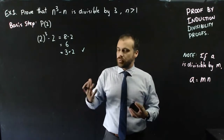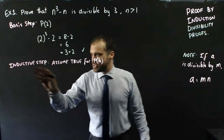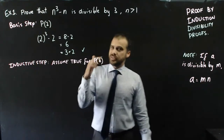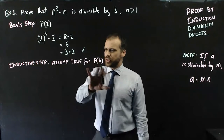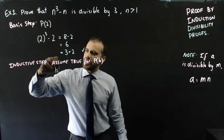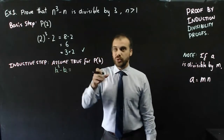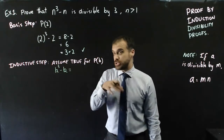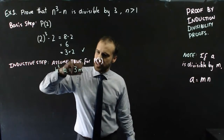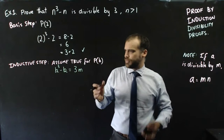Now we do our inductive step. The first step of the inductive step is to assume it's true for pk. We can say that k cubed minus k can be expressed as 3 times m, where m is some integer.